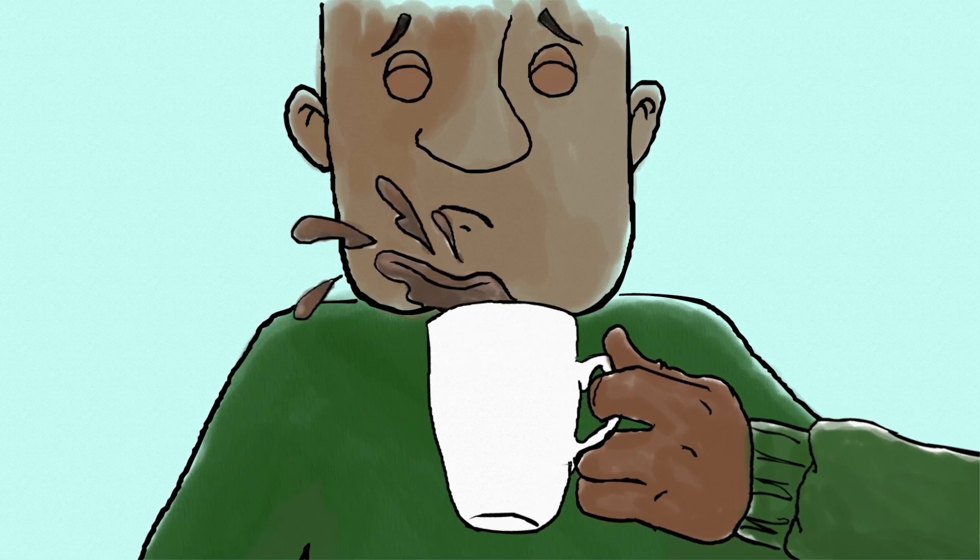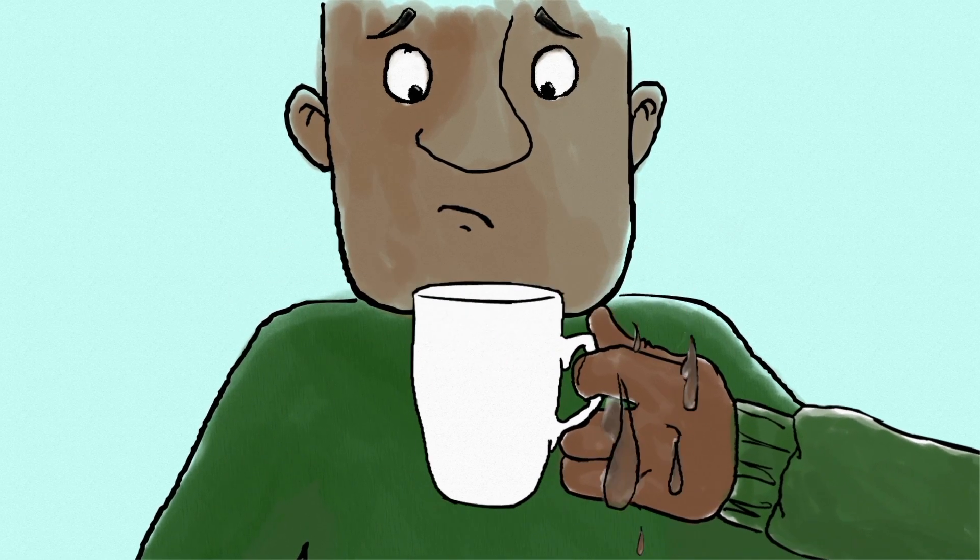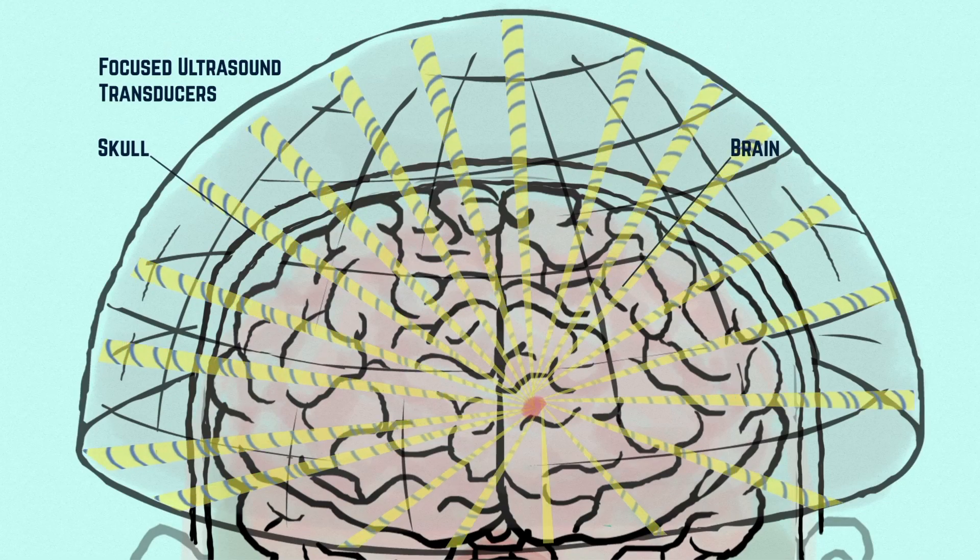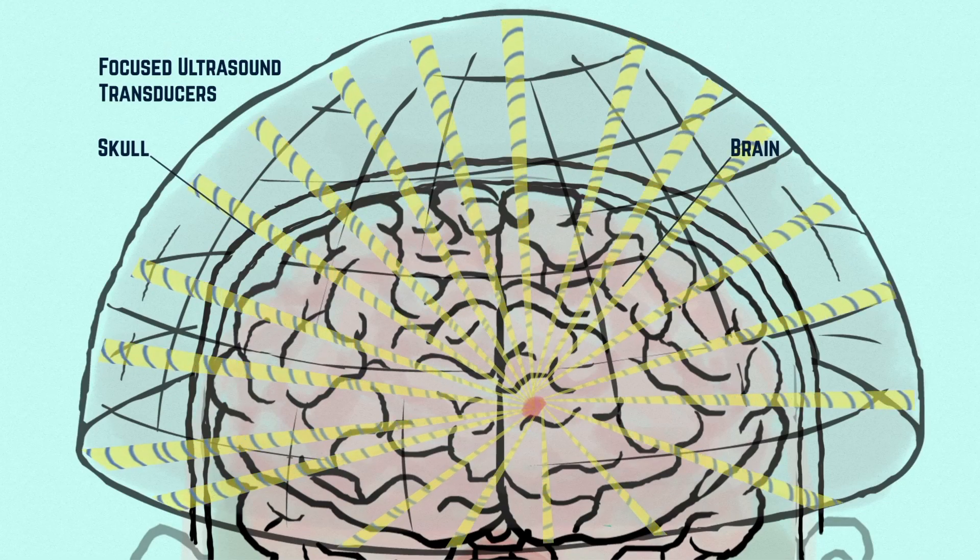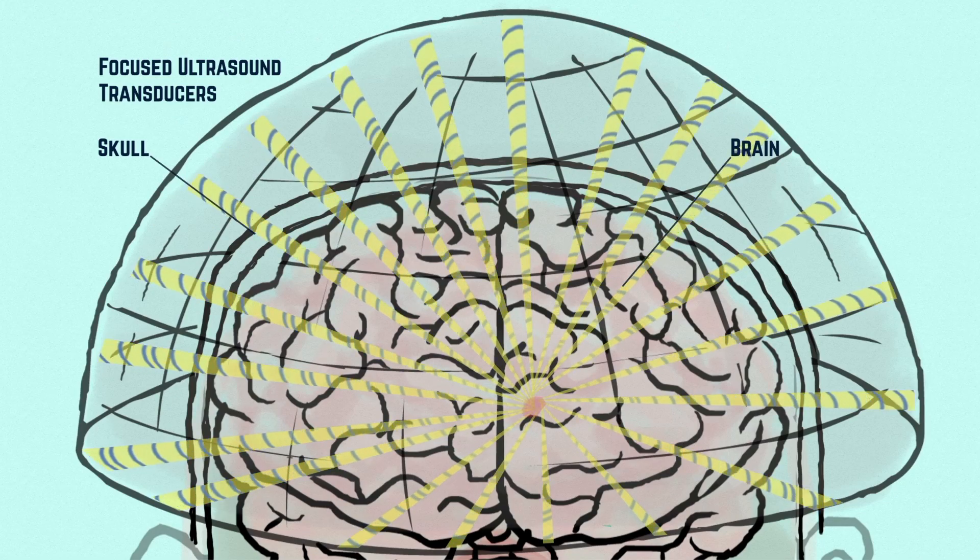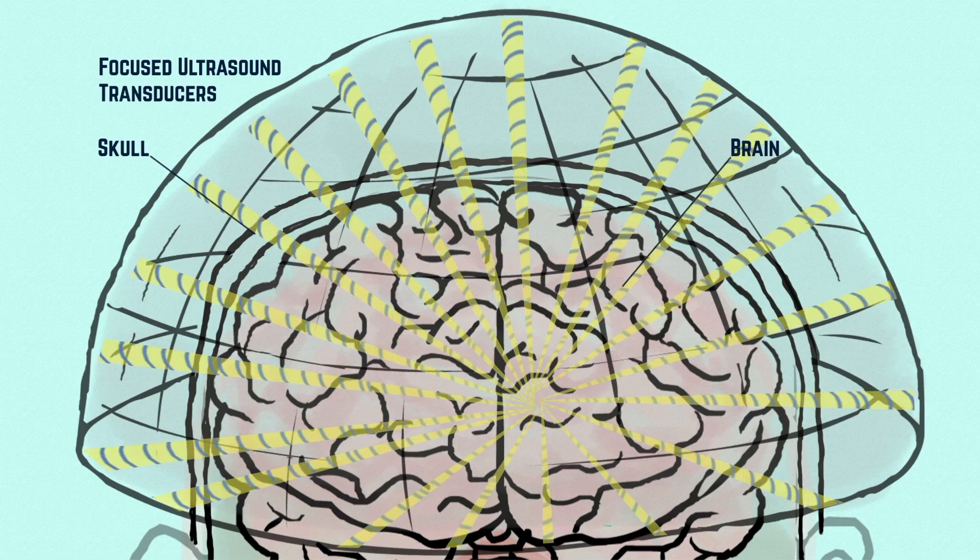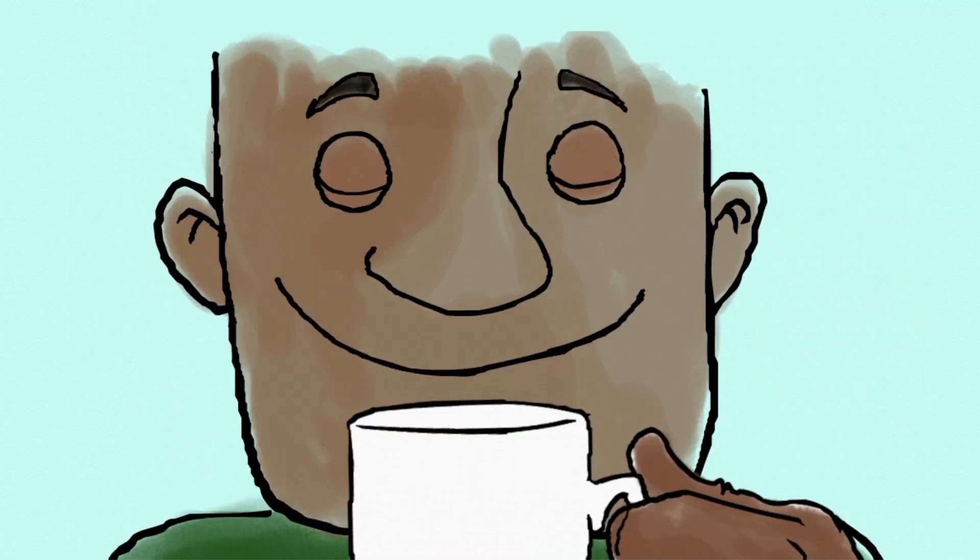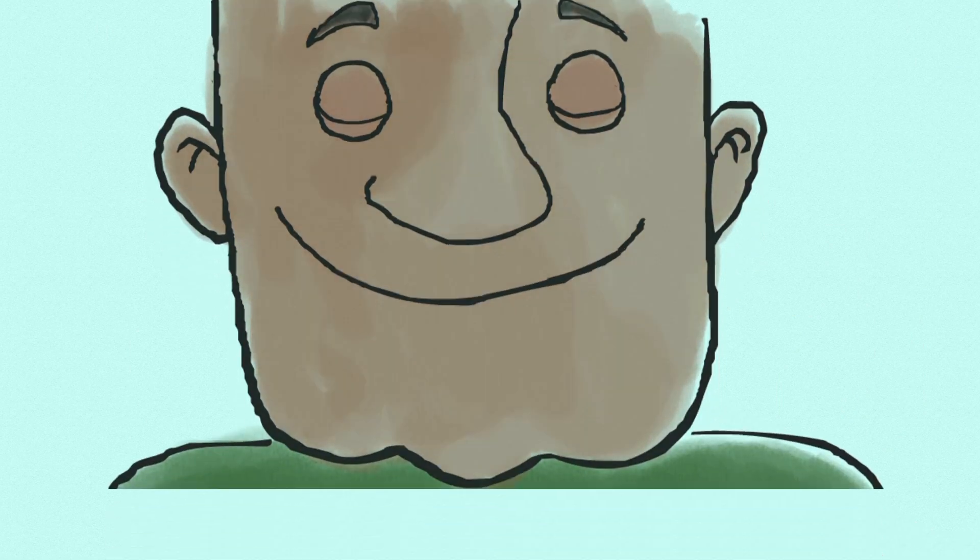Essential tremor is completely debilitating. It means that people cannot drink, for example, a hot cup of tea without spilling it. We don't have to introduce probes into the brain to destroy these regions. In the past, this has been the only way of treating essential tremor. And so the quality of life for these patients is greatly enhanced.